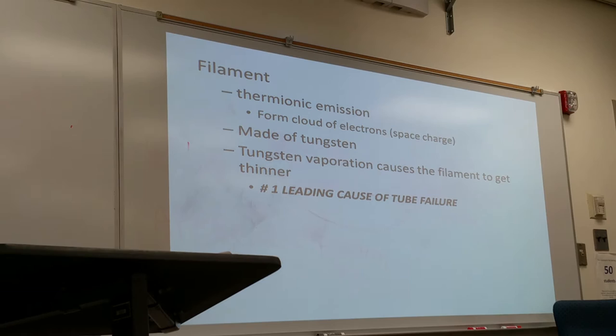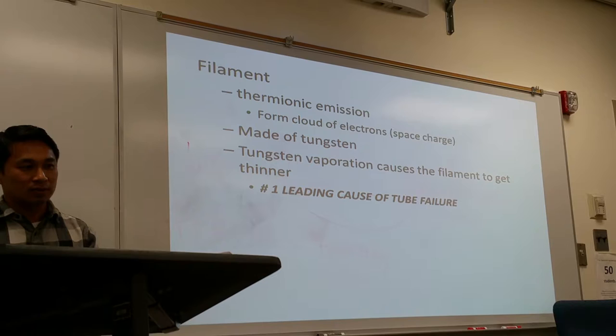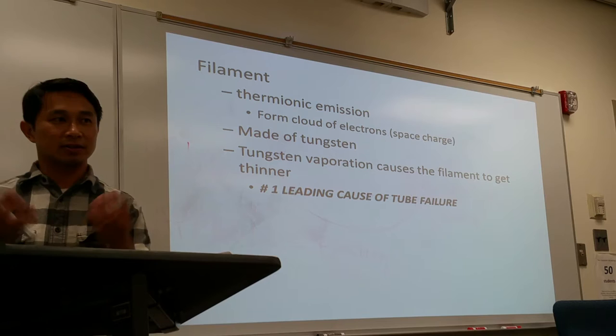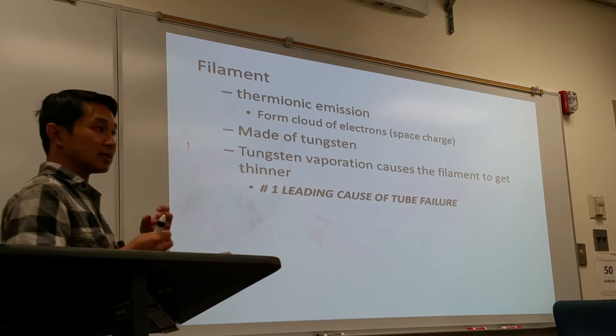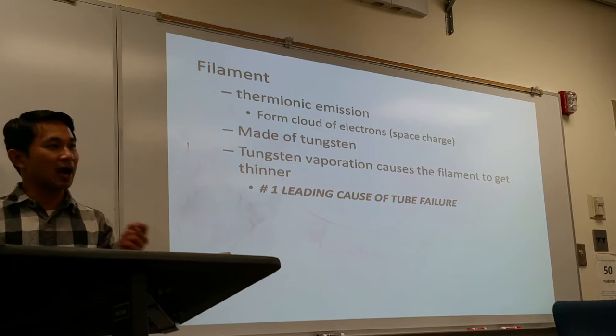The filament is where thermionic emission occurs. When current flows through the filament, it starts to glow very hot. It then produces what we call space charge, which is just a cloud of electrons. As the space charge continues to build, these electrons will escape from the filament. The escaped electrons become the projectile electrons, traveling from the filament straight to the anode side at very high speed.